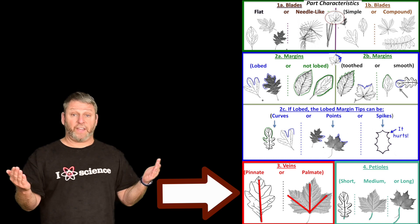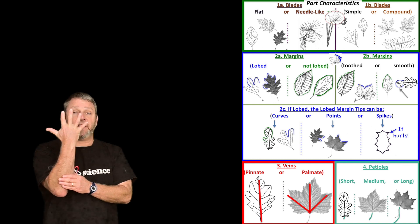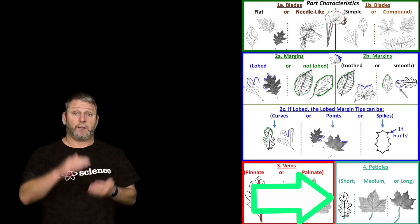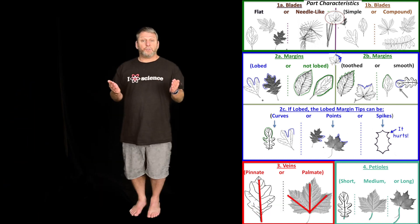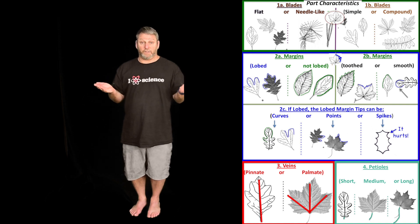Then you move to the veins. The veins are either going to be pinnate, one straight as a pin, or palmate with lots of veins. Then last but not least, you're going to make the choice between a short, medium, or long petiole. Now that you know your choices, let's see an example of how another leaf lover makes the choices in describing the parts of the leaf.